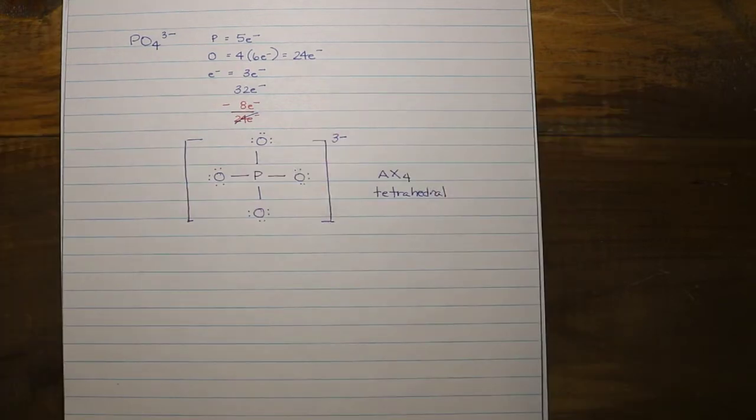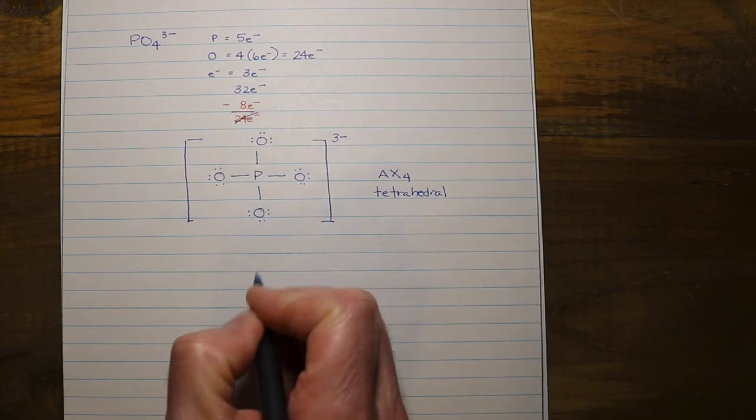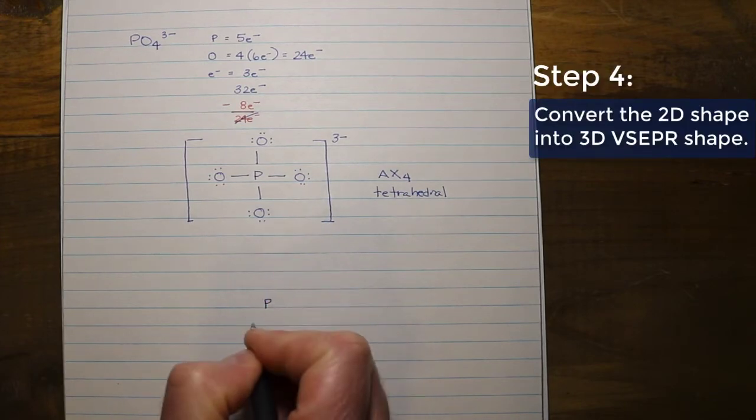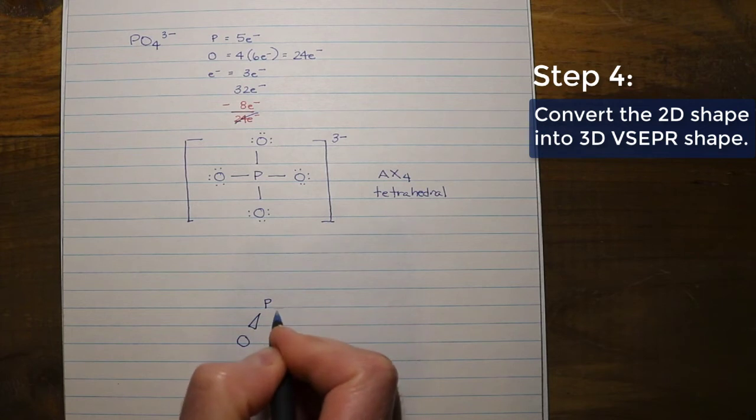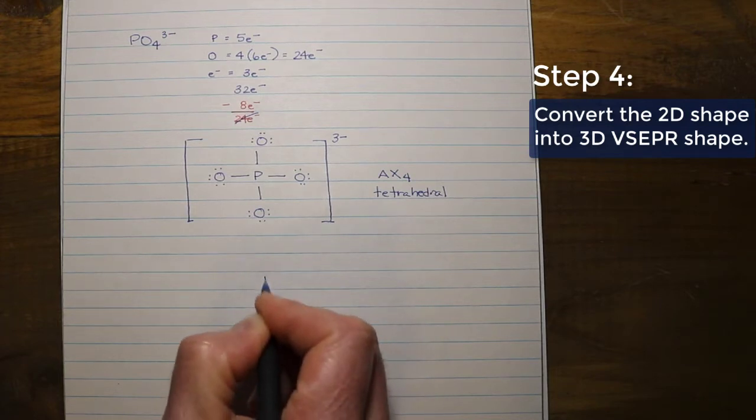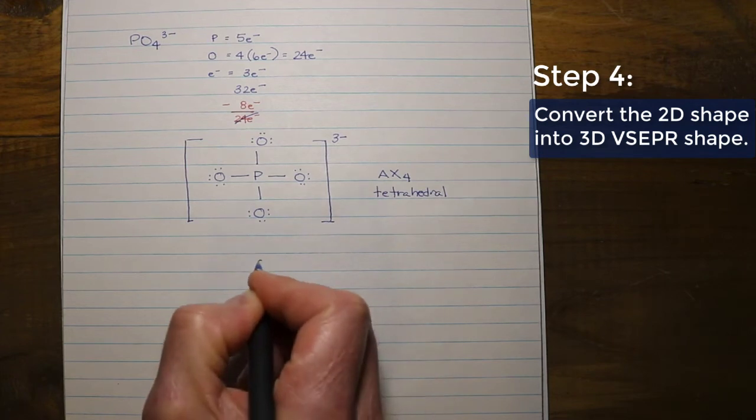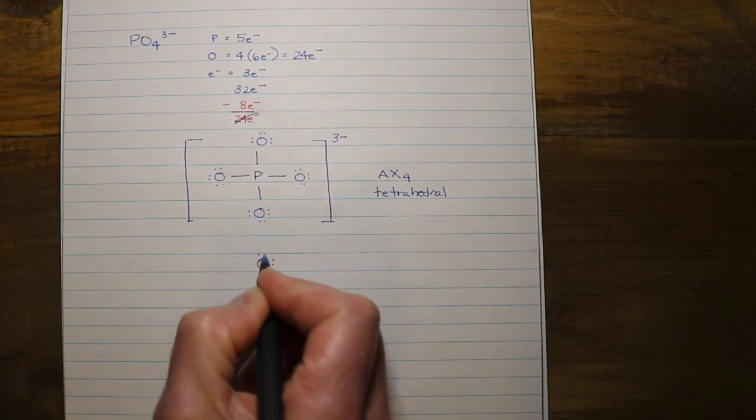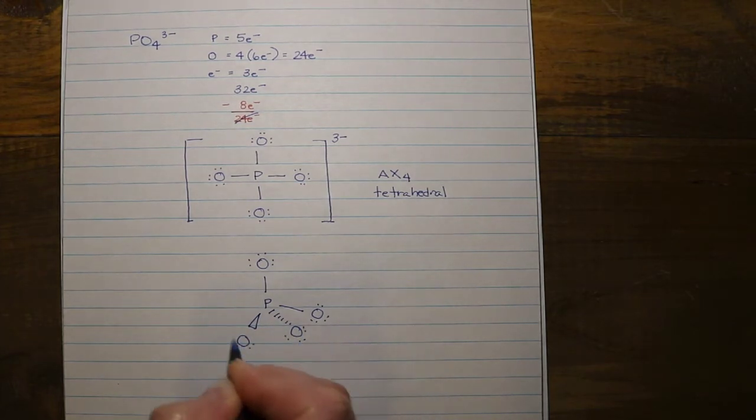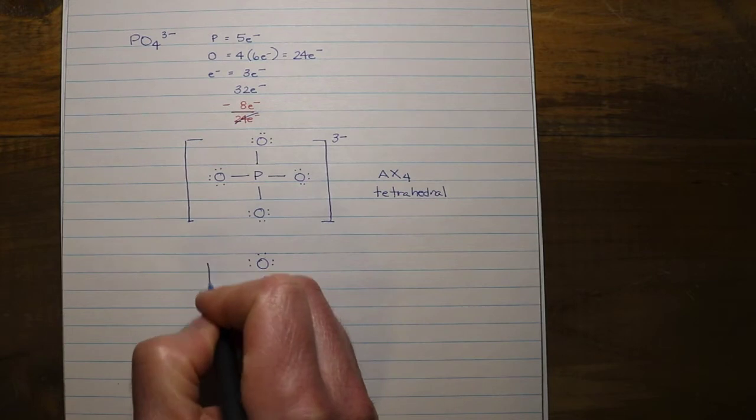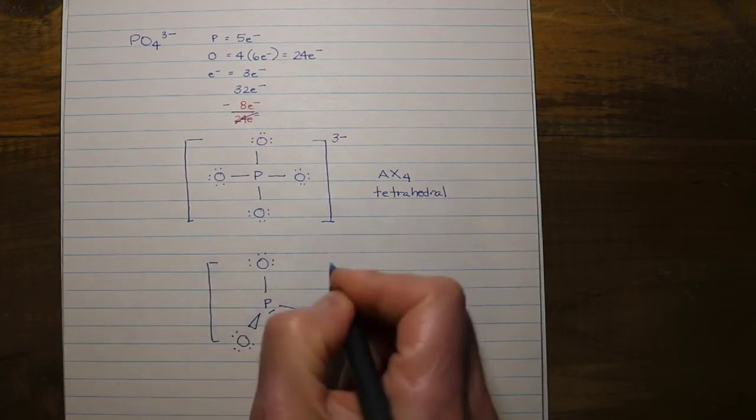The way that I'm going to represent this is as a tetrahedral shape. I have my central phosphorus, I have one of my oxygen projecting outwards, out of the plane of paper, and that's where this triangle comes in. I have another one of my oxygen projecting backwards, and I have one, two in the plane of the paper. So with that done, this would be the three-dimensional structure of a tetrahedral polyatomic ion, like phosphate.